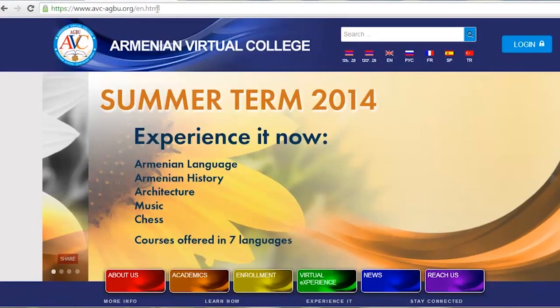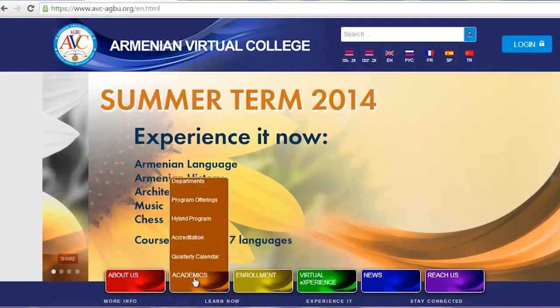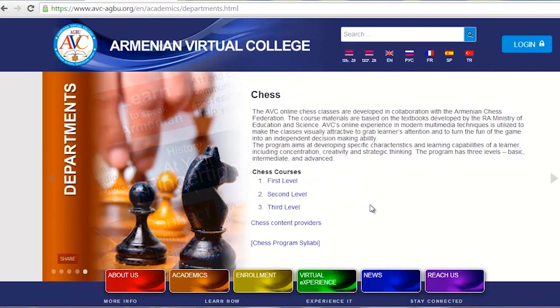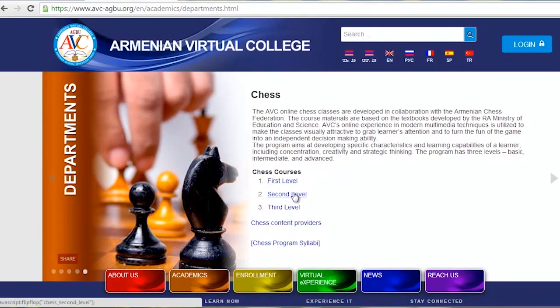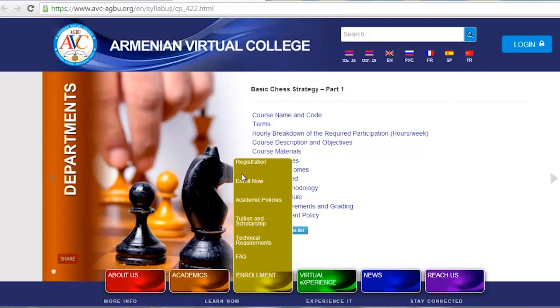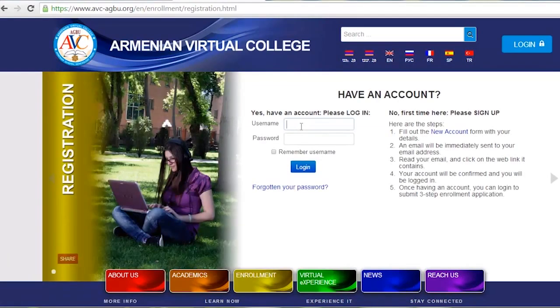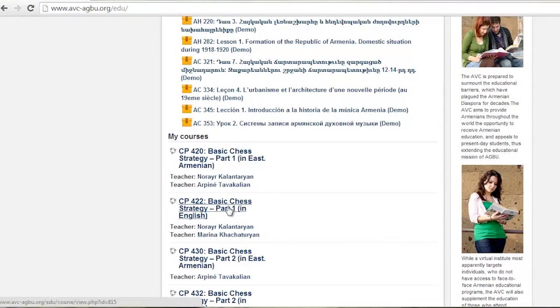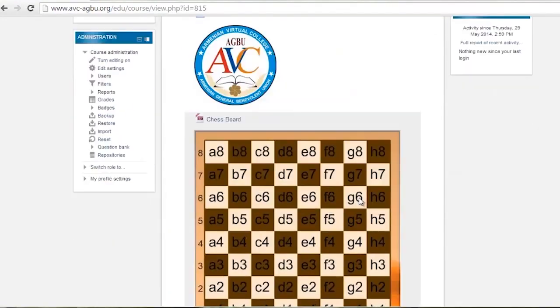The AGBU Armenian Virtual College invites you to walk through a demonstration of the interactive online learning process of AVC Online Chess Course. AVC has developed this program to offer Armenian chess expertise throughout the world. The courses are offered from the basic level and in several languages. Now let's see how the online chess course looks like.